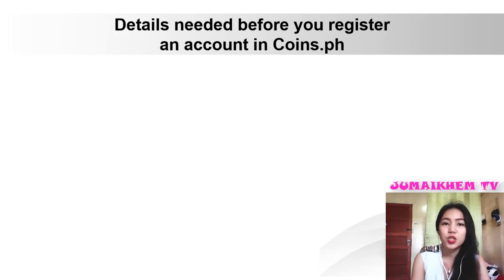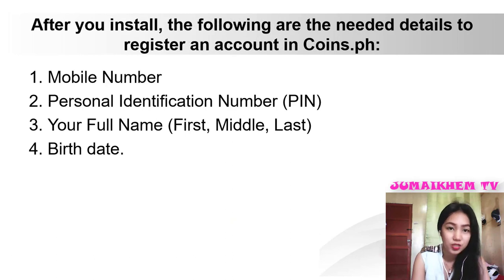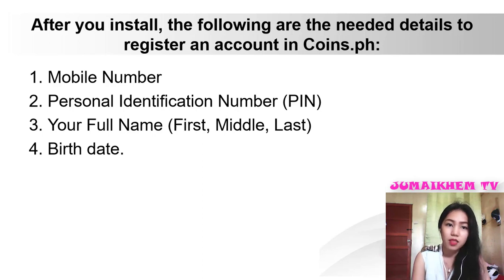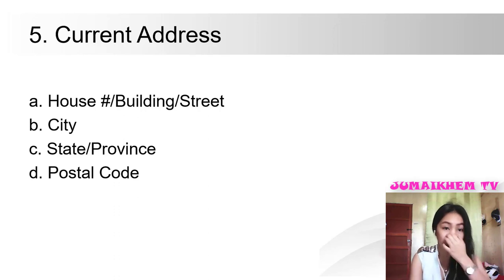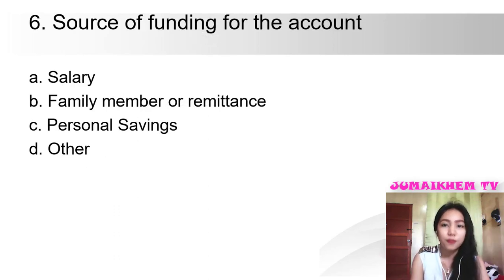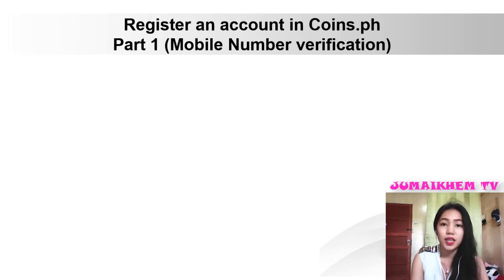Details needed before you register an account in coins.ph. After you install, the following are the needed details to register: 1. Mobile number. 2. Personal identification number or PIN number. 3. Your full name — first, middle, and last name. 4. Birth date. 5. Current address — house number, building, street, city, state or province, then postal code. 6. Source of funding for the account. You can choose salary, family member or remittance, personal savings, or others.